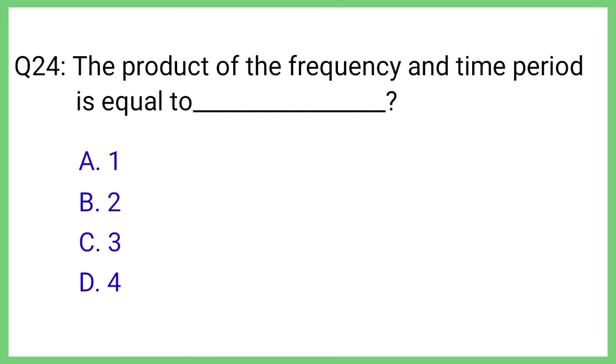Question No. 24. The product of the frequency and time period is equal to. The correct answer is Option A. One.